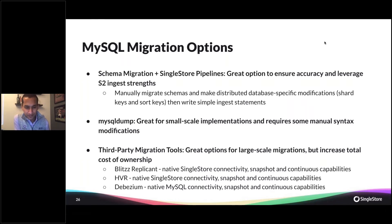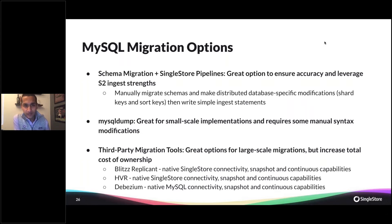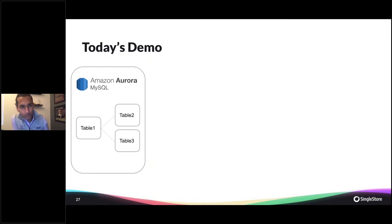There are also additional things you'll add to your SingleStore schema, like shard keys and sort keys, which may change if you do a MySQL dump. The last option is really for larger-scale migrations — we partner with several third-party migration tools for much larger implementations, like Blitz, Replicant, HVR, and Debezium, each with pros and cons. For example, Blitz has native SingleStore connectivity with snapshot and continuous capabilities, and Debezium has native MySQL connectivity. Here at SingleStore, we're also actively developing additional native migration options.